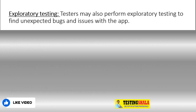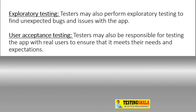The next type of responsibility is exploratory testing, where without developing any test cases — in an ad hoc or self-learning way — you will be doing exploratory testing to find any unexpected issues and reporting them to the development team for fixes. Then, the next type of testing is user acceptance testing, where sometimes a tester can also support real users in order to test the application.